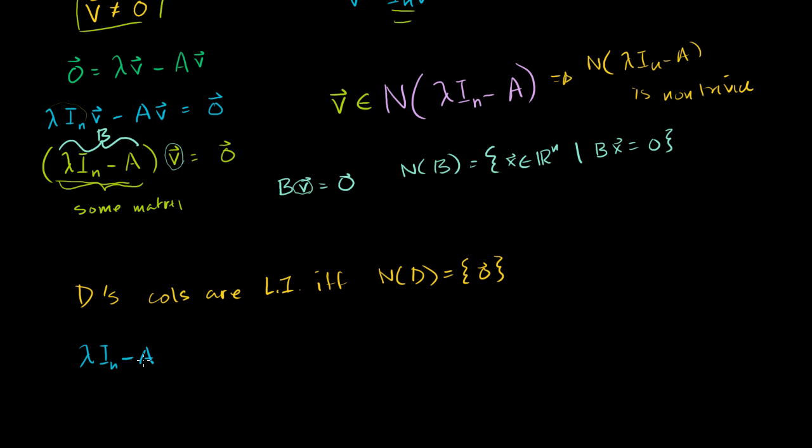So lambda I_n minus A, it looks all fancy, but this is just a matrix, must have linearly dependent columns. Or another way to say that is, if you have linearly dependent columns, you're not invertible, which also means that your determinant must be equal to 0. All of these are true. If your determinant is equal to 0, you're not going to be invertible, you're going to have linearly dependent columns, and that also means that you have non-trivial members in your null space.